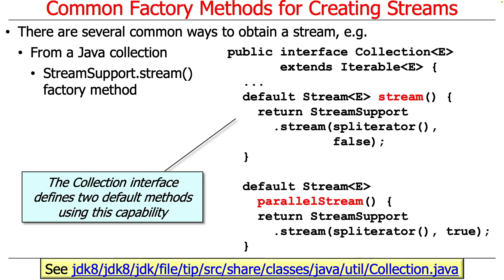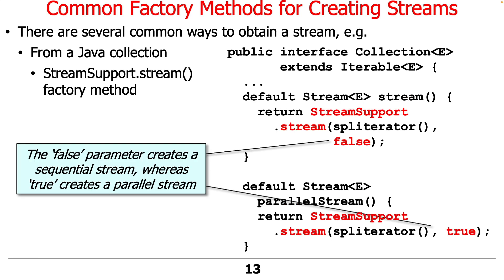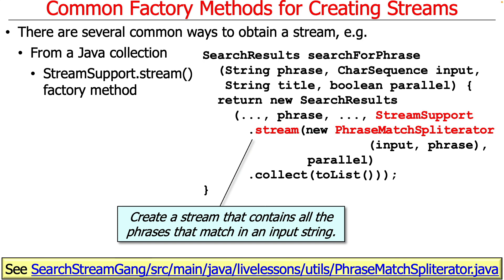What's interesting to note is that the Collection interface, which all Java collections in the collections framework implement either directly or indirectly, has support to convert a collection into a stream. The stream() and parallelStream() factory methods are default methods, meaning they always exist for all collections. They call StreamSupport.stream() using the spliterator() method to convert the collection into a spliterator, then make it either a sequential stream (false as the second parameter) or a parallel stream (true). We use this to create a stream containing all the phrases that match in our input string.